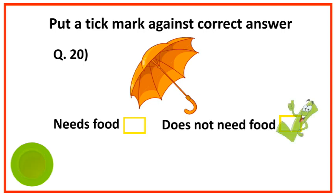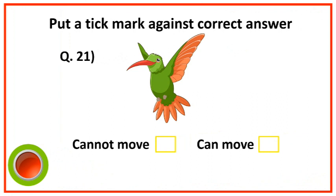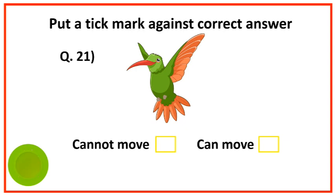Put a tick mark against the correct answer: an umbrella does not need food. Bars can move.